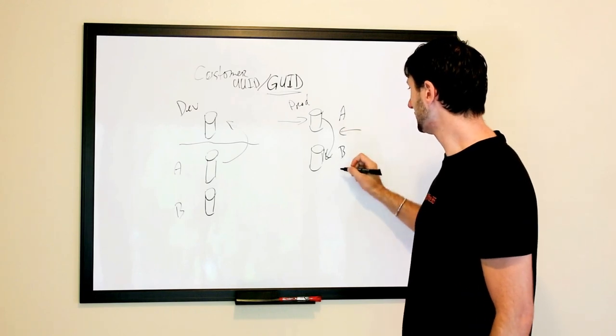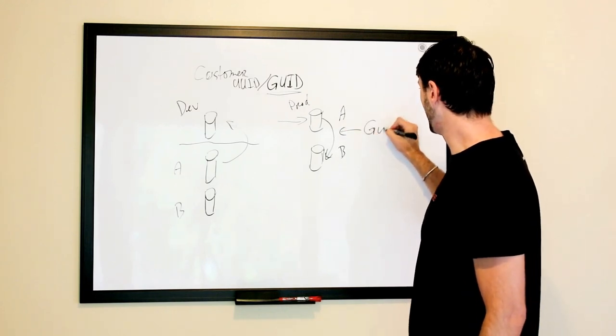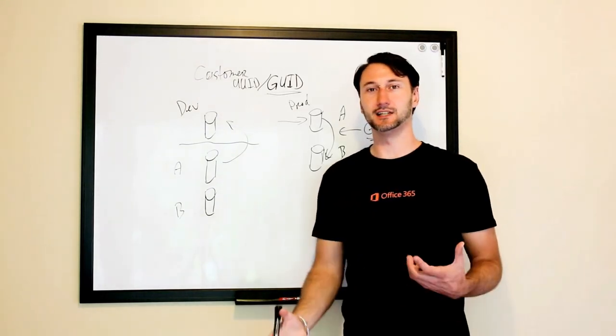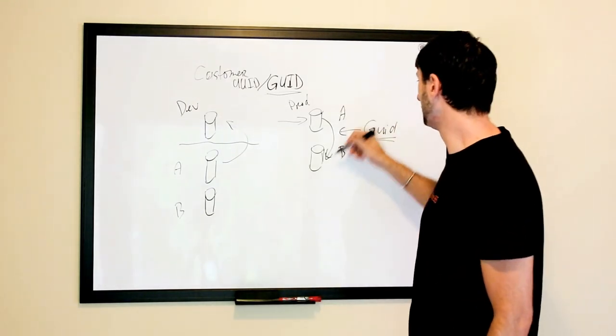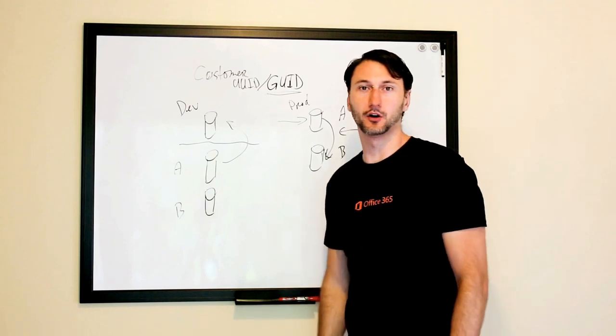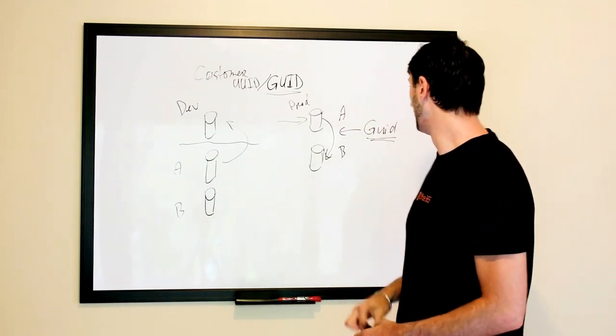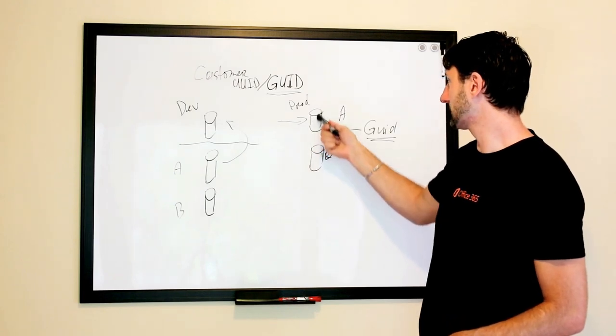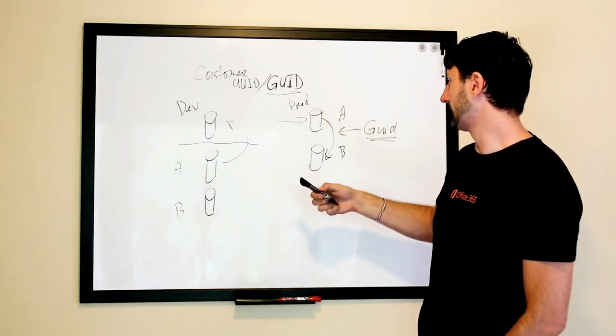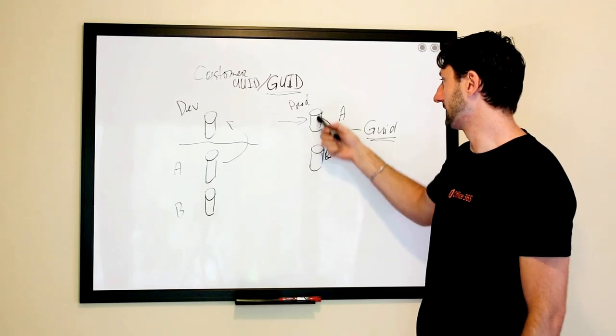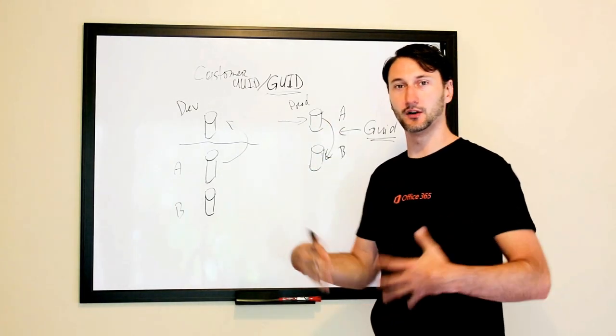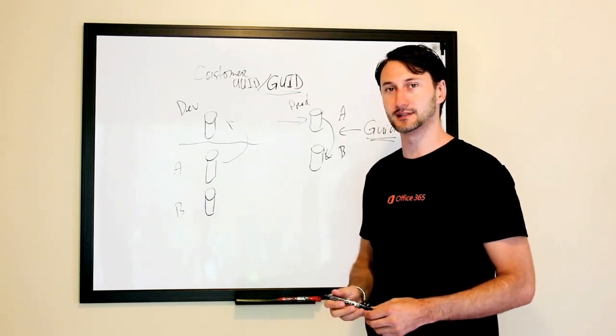The nice thing about here if you're all GUID based on your identifiers you can really see that diff of data and so you can really move just the records that are new or changed way more easily if it's GUID based. Because in the other case if you have a customer where customer one is created here and customer one is created here but they're different customers you have huge issues to figure out how that data fits together.